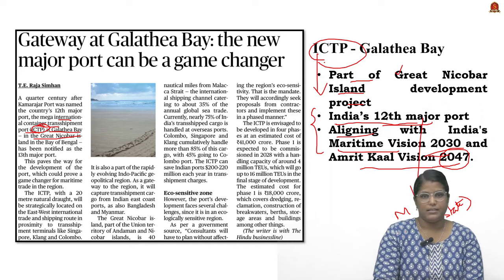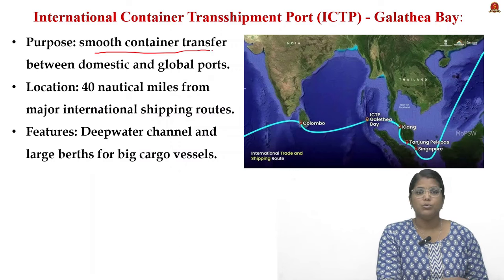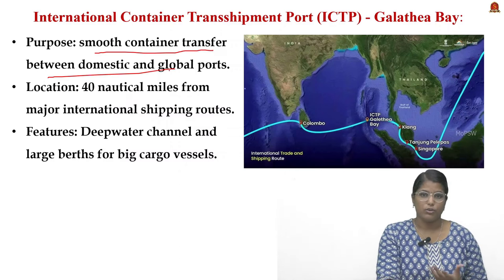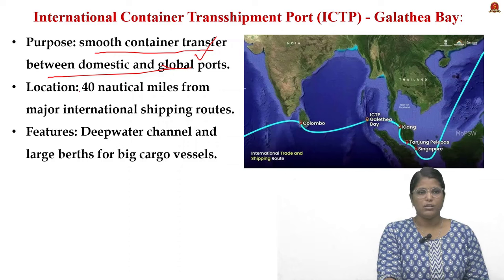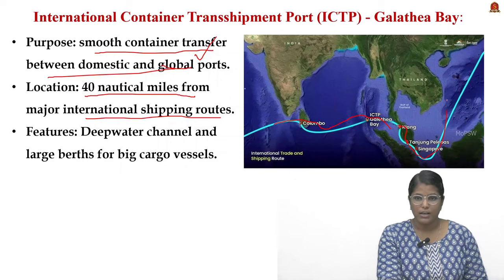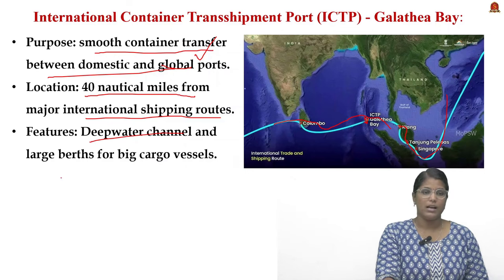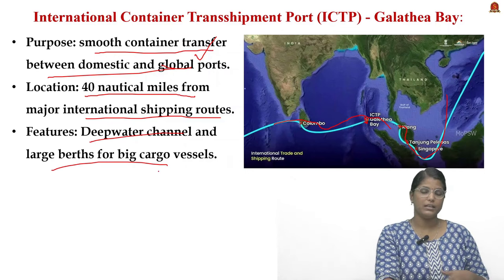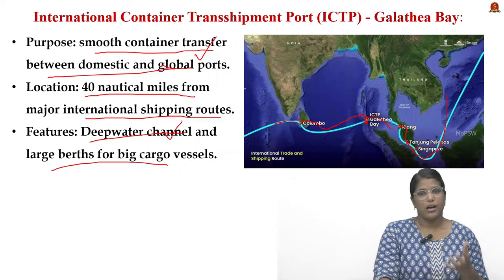The very purpose of this ICTP is to bring smoother container transshipment between domestic and global ports. This port enables smooth container transfer because it is located only 40 nautical miles from a major international sea route. Apart from this, it has a deep water channel and large berths for big cargo vessels, meaning the area can accommodate even larger ships.